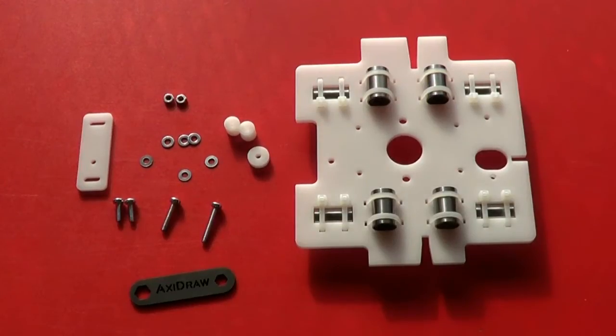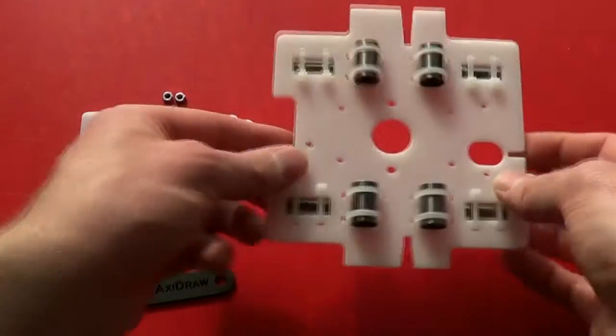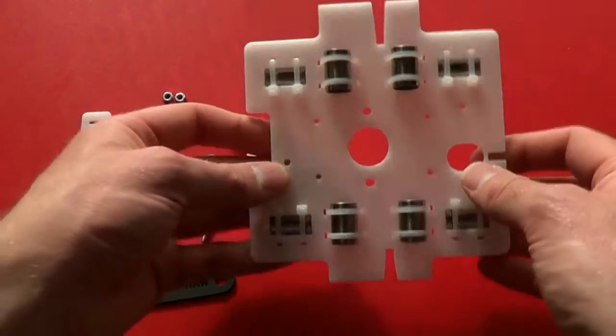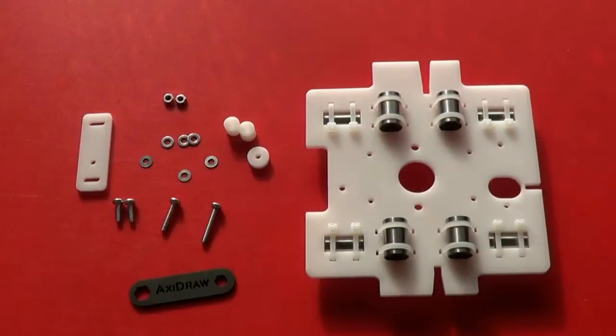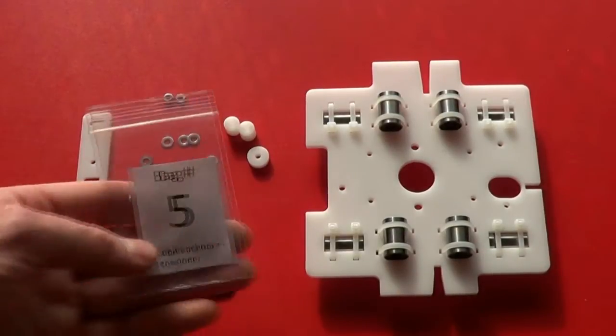Here we're going to mount the X-belt anchors and the Y-belt guide rollers to the main carriage. So for this you'll need the main carriage, that's the piece with the bearings mounted on it, the contents of bag number 5.